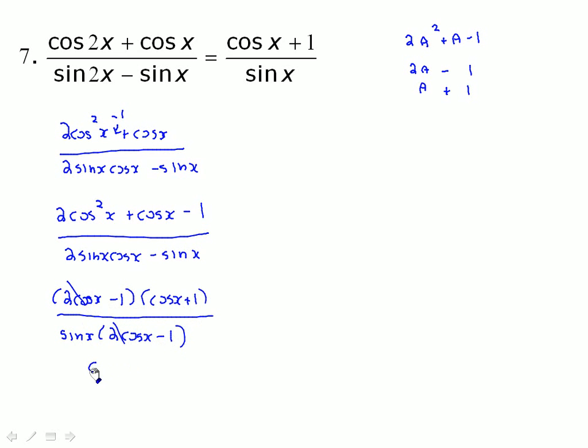And then through division, these go away and we get cos x plus 1 over sine x, which is in fact equal to the right side, cos x plus 1 over sine x. So that one works out well. A little bit more algebra involved.